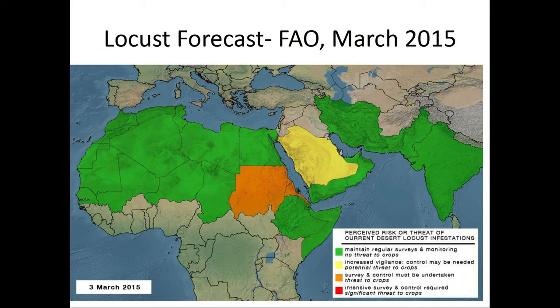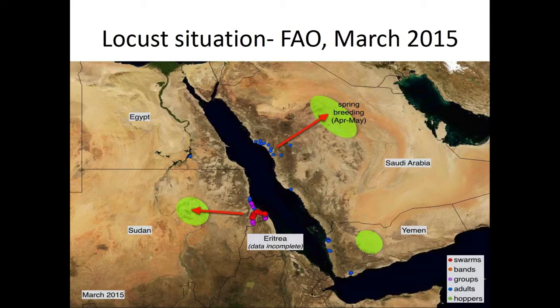It is a huge region covering many countries and billions of people. In a single map they are able to provide an assessment of the perceived risk or threat of current desert locust infestation. The same set of data is also presented for a smaller region, and you find that as the region becomes smaller, finer and finer representations are possible.